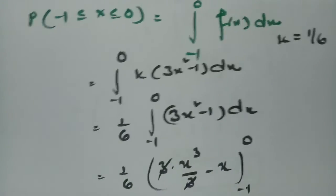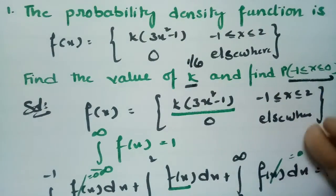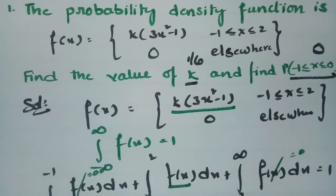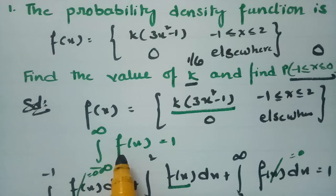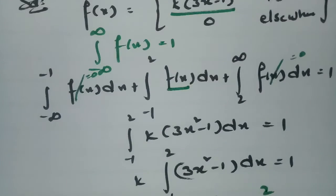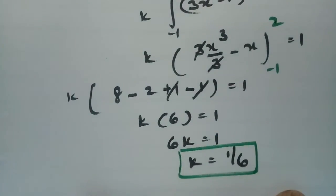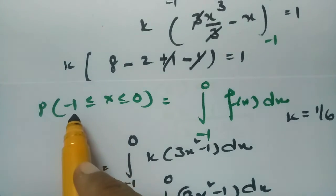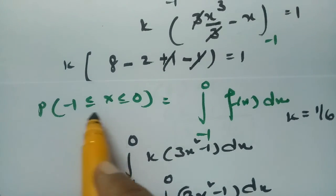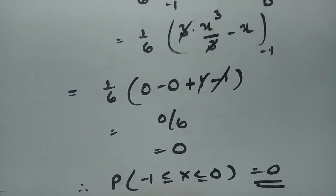So these are the two values we needed to find: k = 1/6, and the probability P(-1 < x < 0) = 0. To find k, we used the property that total probability equals unity, then substituted f(x), integrated, and applied the limits. For the probability, we substituted k = 1/6, integrated, and got 0.